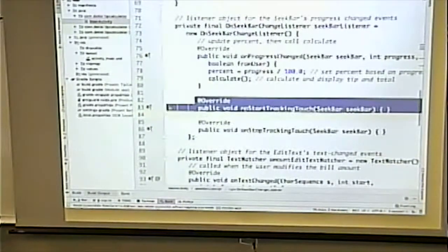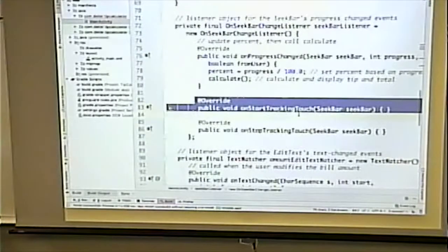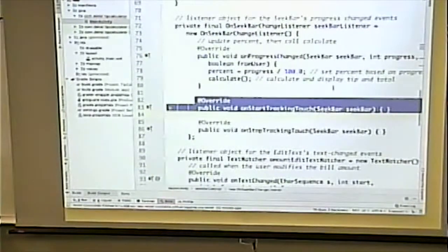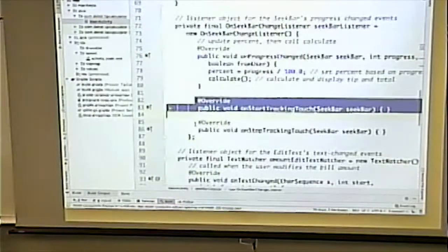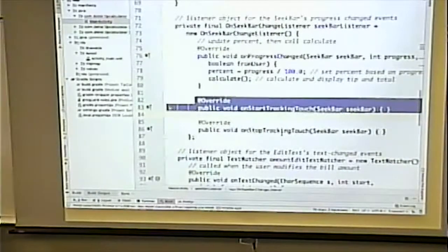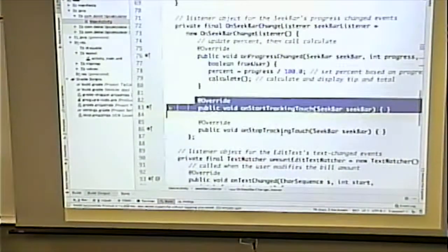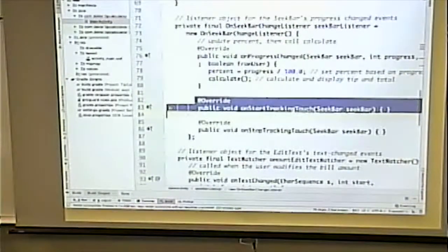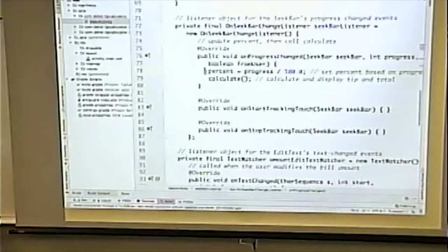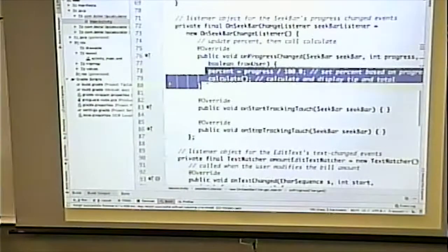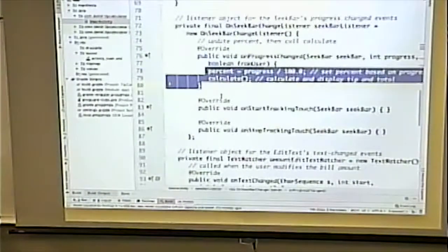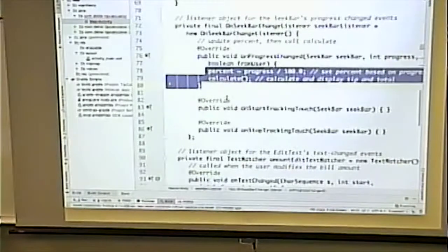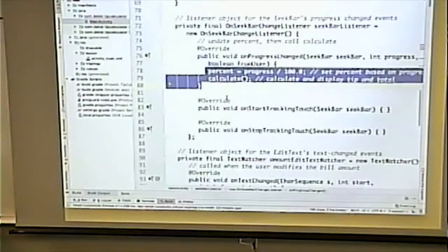This method will go off once you start moving that seek bar. This will go off once you've stopped. So as I drag and stop. And this one fires off on seek, on progress changed, when the value has actually changed. I need to define all three of those. Because all three of those are in the interface. Right.